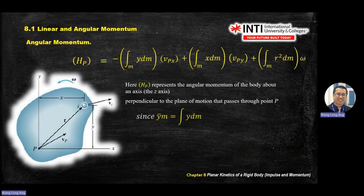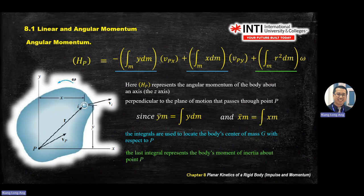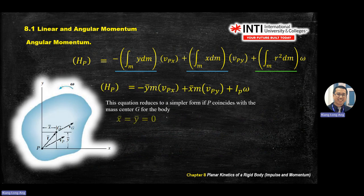I won't ask you to derive this, but you need to understand the concept. When you do your analysis, expect three components in your answer. One component is y multiplied by mass multiplied by v — that's mv, the momentum. Multiply mv by the arm r and you get the moment of linear momentum. Some terms represent inertia contributions.